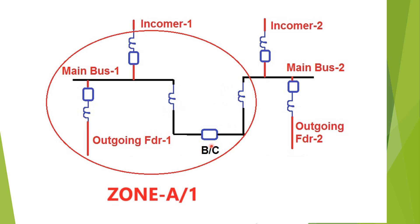There are two zones of bus bar protection relay — zone A and zone B (zone 2). Zone A or zone 1 is formed via outgoing feeder one CT, incomer one CT, and the CT connected towards the main bus two side of the bus coupler bay. If a fault occurs within this zone, these three breakers will be tripped and the fault will be cleared.